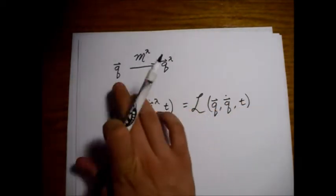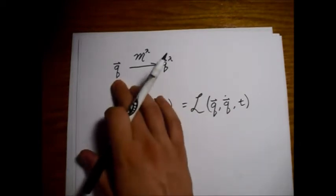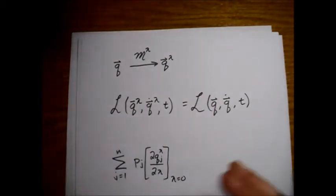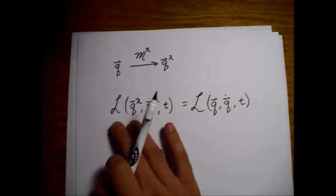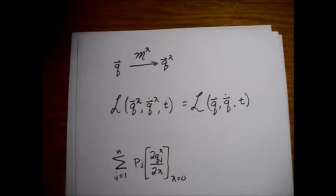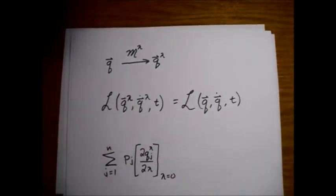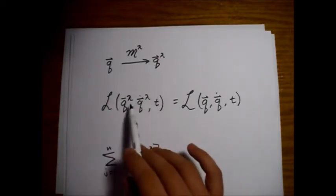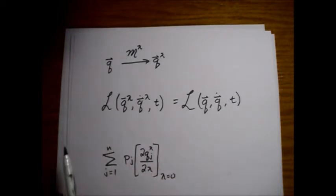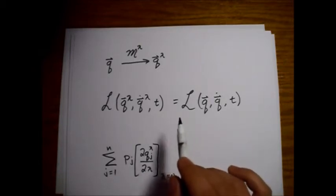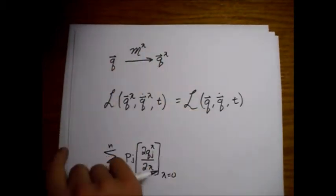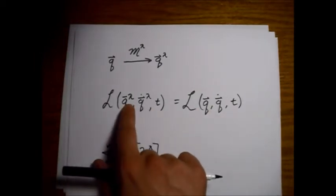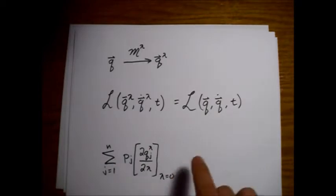Alright, so suppose we have this family of mappings that transforms these Q generalized coordinates into Q lambda generalized coordinates. And suppose that leaves the Lagrangian invariant, so it may not quite look the same, right? I mean this one has lambdas in it, and this one doesn't, but they are in fact the same function. So suppose that actually happens, that we're able to make this transformation based on these mappings and the Lagrangian stays the same.